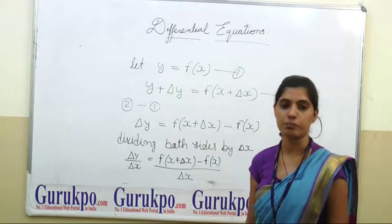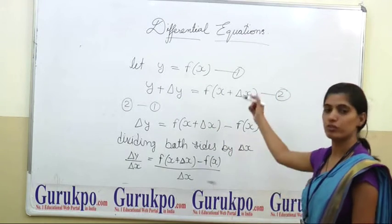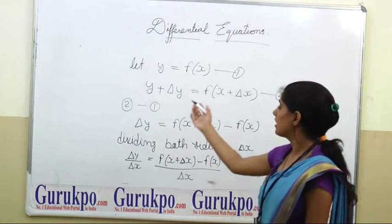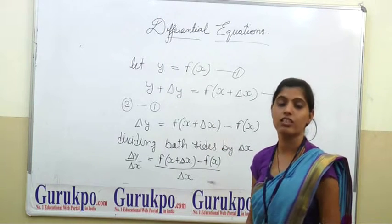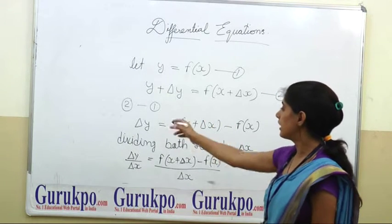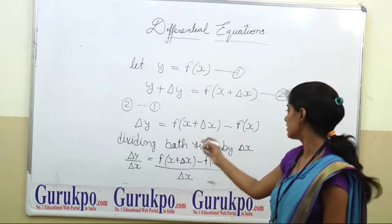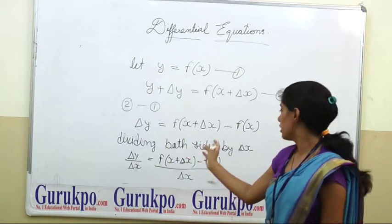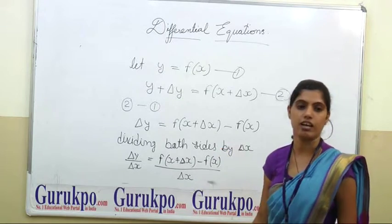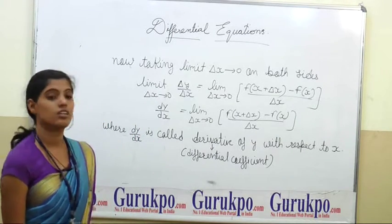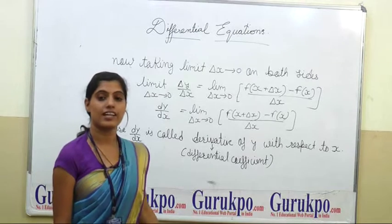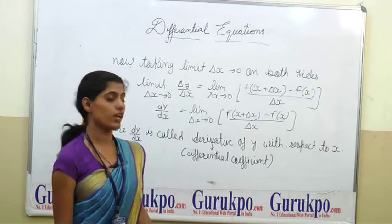What is a derivative? Let y = f(x) — equation number one. Then y + Δy = f(x + Δx) — equation number two, where Δy and Δx are small changes in y and x respectively. Subtracting equation one from equation two: Δy = f(x + Δx) − f(x). Dividing both sides by Δx: Δy/Δx = [f(x + Δx) − f(x)] / Δx. Taking the limit as Δx → 0 on both sides: lim(Δx→0) Δy/Δx = lim(Δx→0) [f(x + Δx) − f(x)] / Δx.